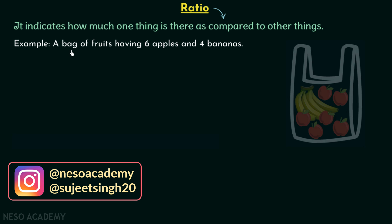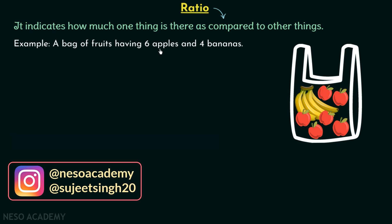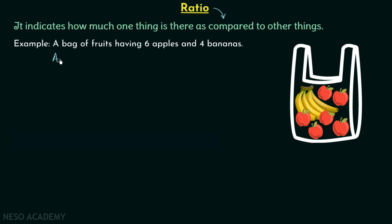The example is a bag of fruits having 6 apples and 4 bananas. So the number of apples — let's say A is representing the apples — is equal to 6. And the number of bananas — let's say B is representing the bananas — is equal to 4.